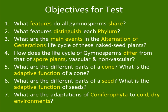Here are your objectives for your test. Number one: what features do all gymnosperms share? Two: what features distinguish each phylum? Three: what are the main events in the alternation of generations life cycle of these naked seed plants? Four: how does the life cycle of gymnosperms differ from that of spore plants, vascular and non-vascular? I should probably specify on the last point — naked seed. Gymnosperm means naked seed.